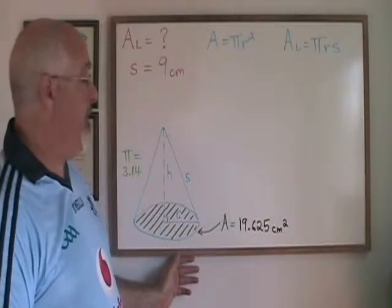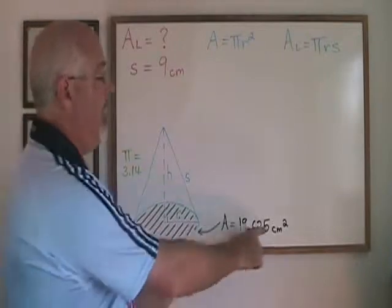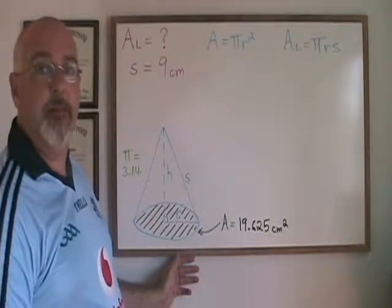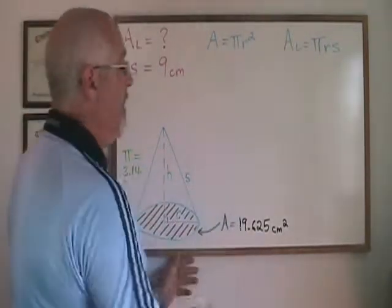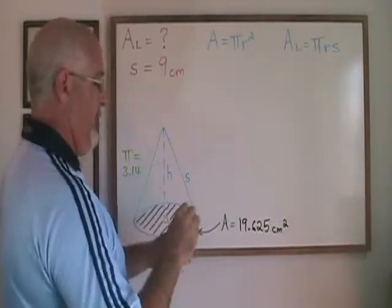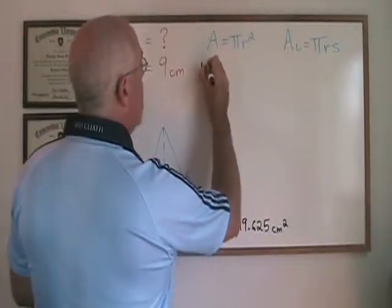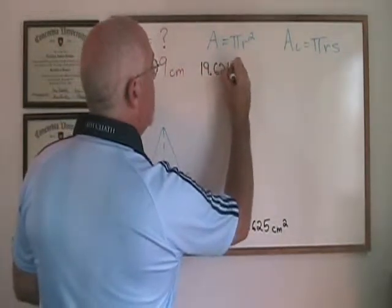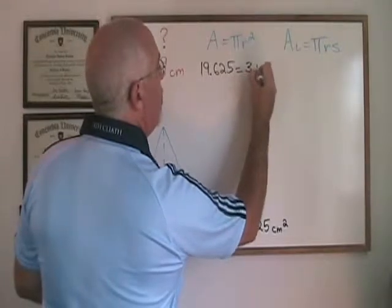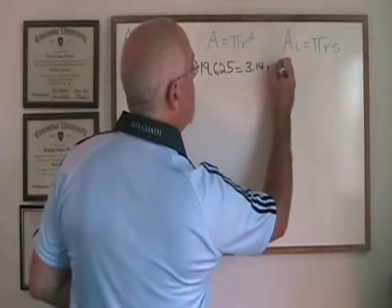We just have to remember our formula for the area of the circle can be used given that area to find the radius. Plugging this value into this formula, we get 19.625 equals 3.14, our value in these examples for pi, r squared.